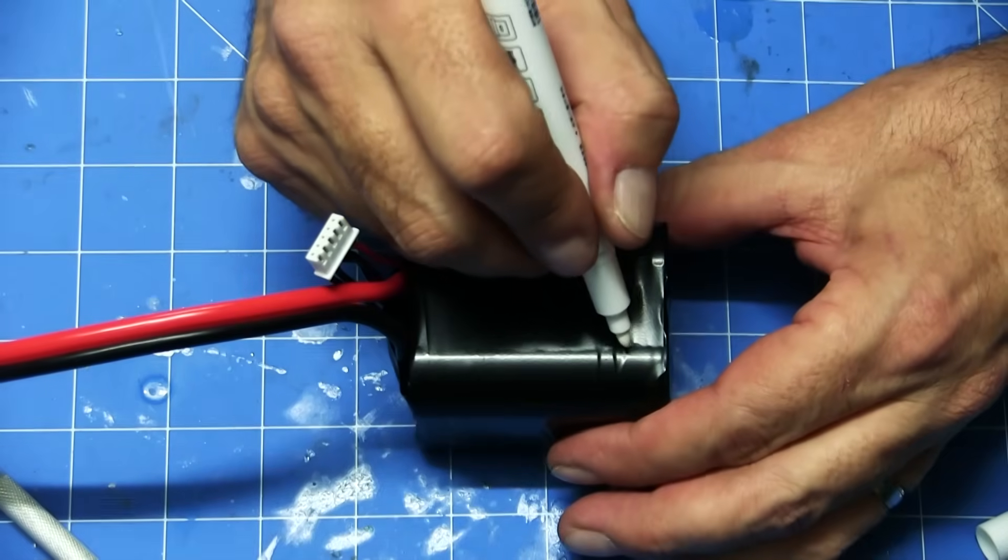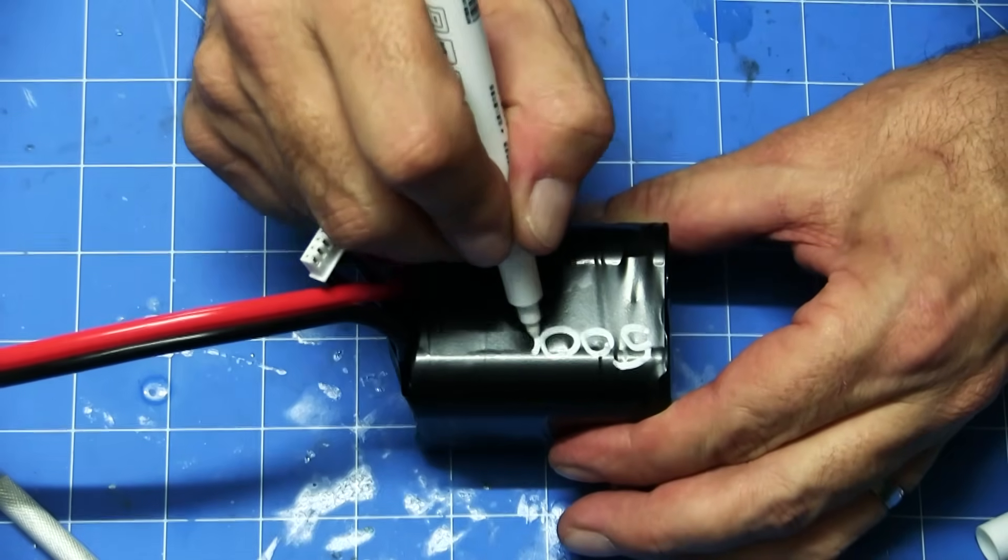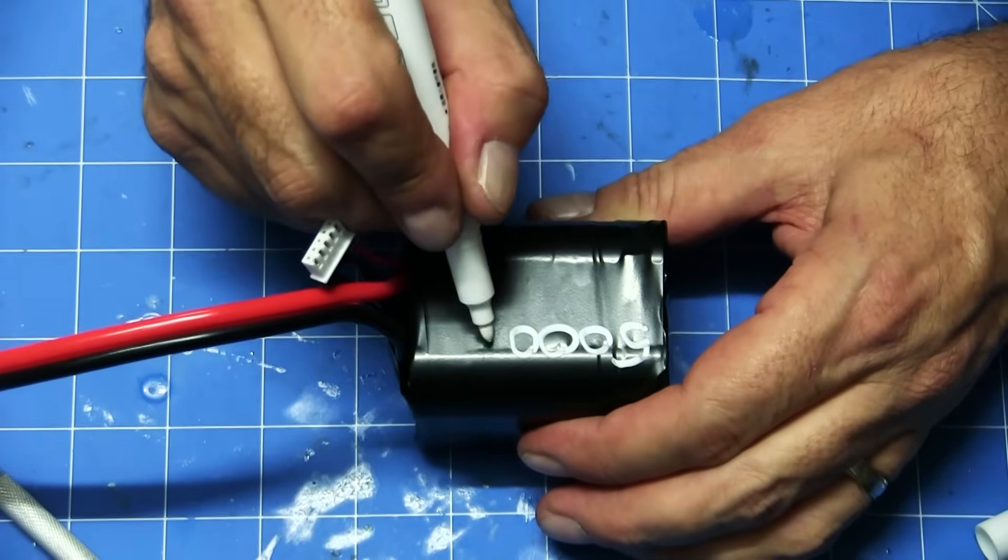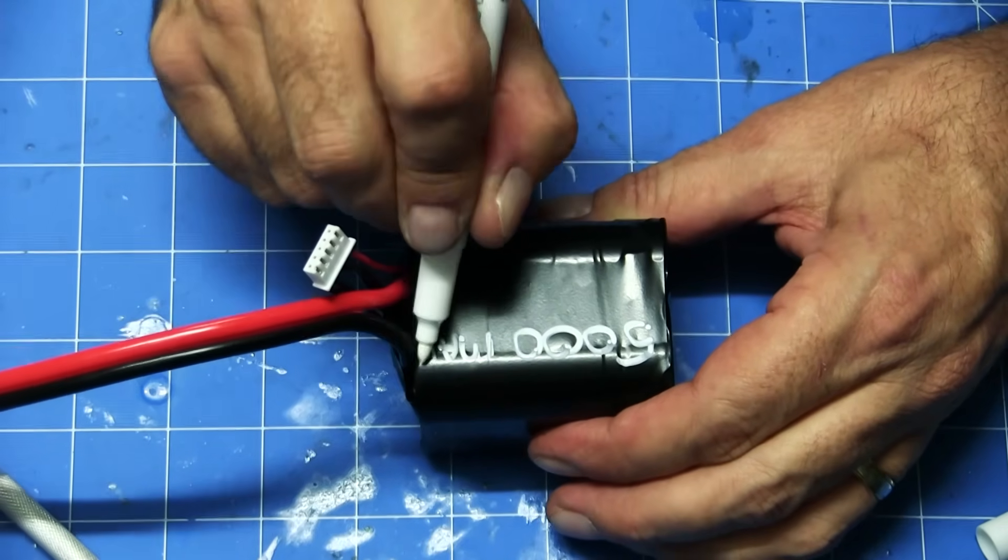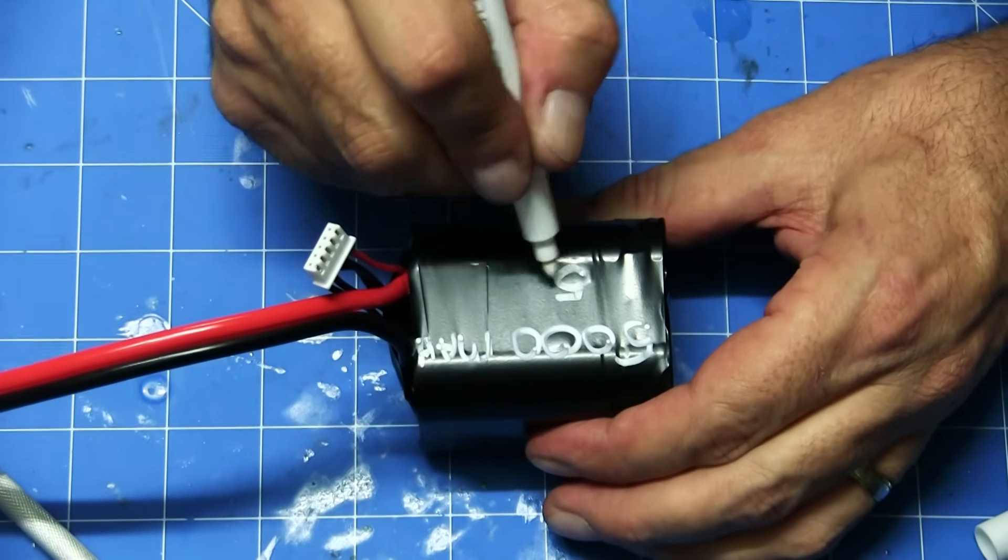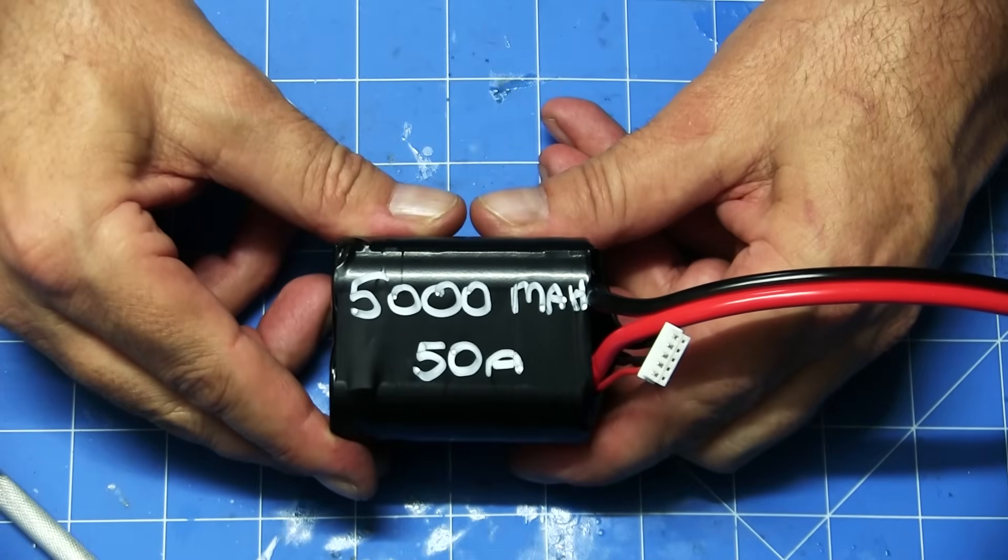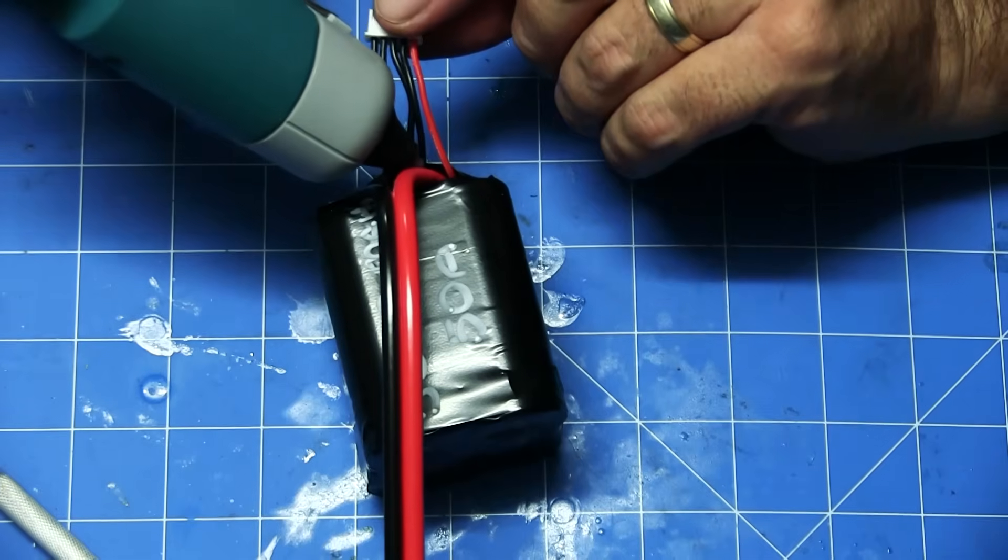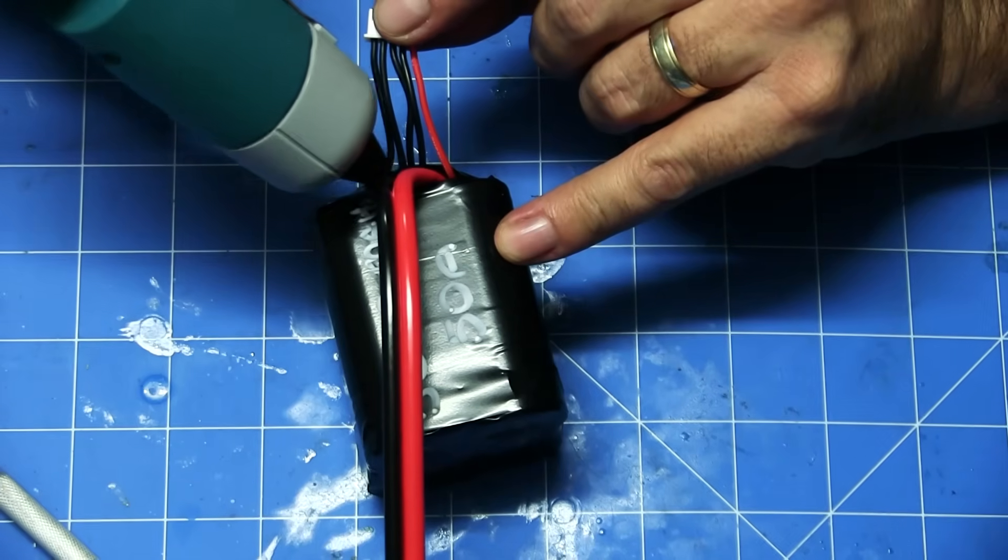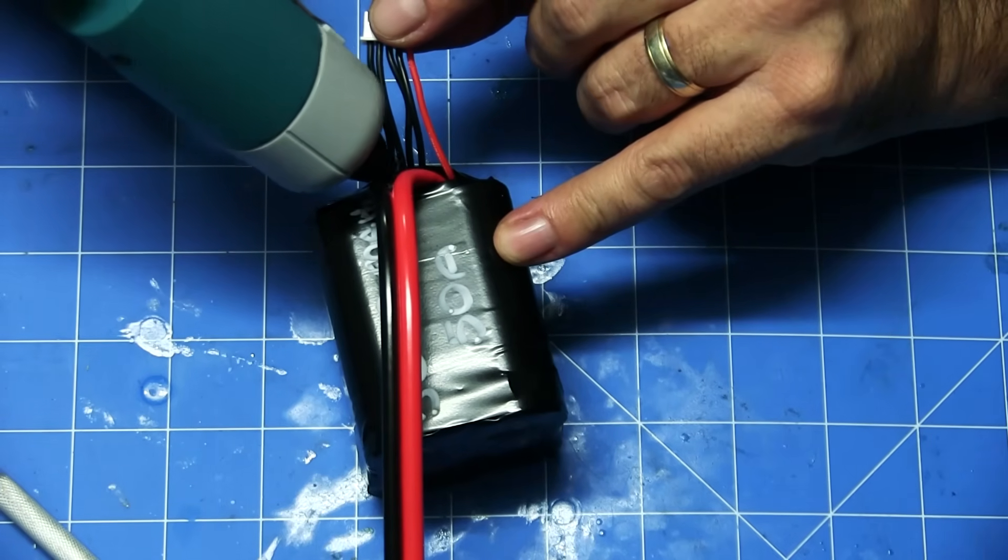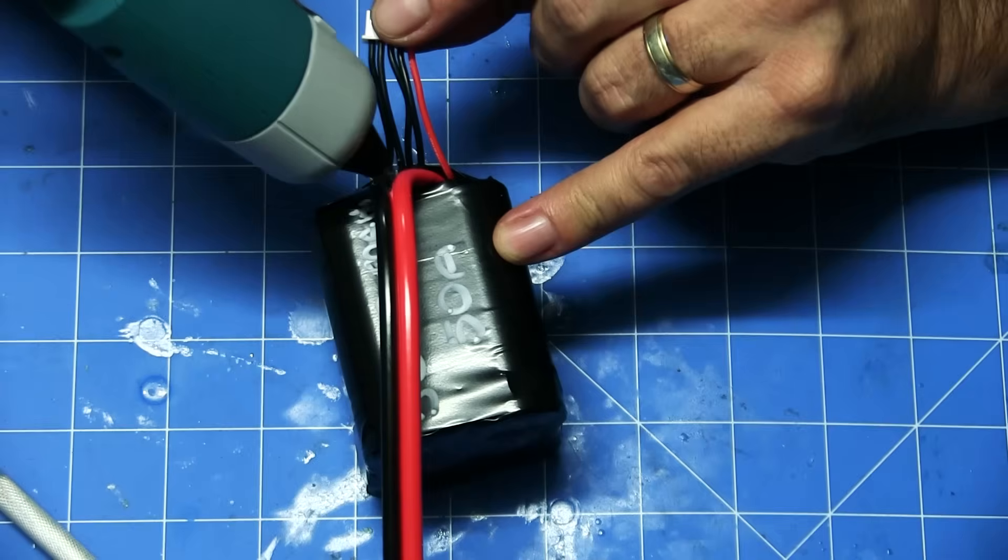Now that our battery is all wrapped up, we will just write on it what the battery is and what its capacity is, just for reference. I like to put a bit of hot glue over the wires just to secure the connections in case of a crash. It's not going to pull directly on the solder. The hot glue will give it a bit of added strength.